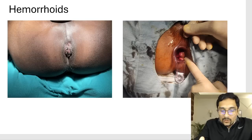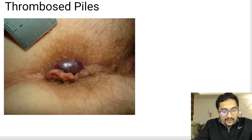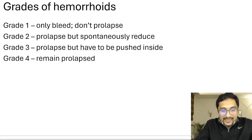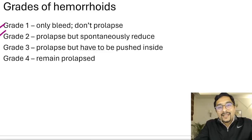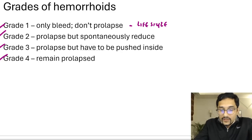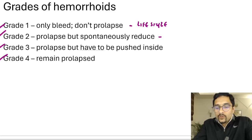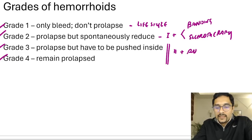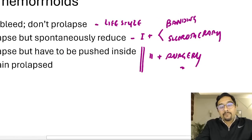External haemorrhoids can be painful because they are below the dentate line and have somatic nerve supply. The four grades of haemorrhoids: Grade 1 only bleeds, no prolapse. Grade 2 prolapses but spontaneously reduces. Grade 3 prolapses but needs manual reduction. Grade 4 remains prolapsed. Grade 1 is managed with lifestyle changes. Grade 2 adds banding or sclerotherapy — banding is preferred. Grades 3 and 4 require surgery; the latest procedure is stapler haemorrhoidopexy.